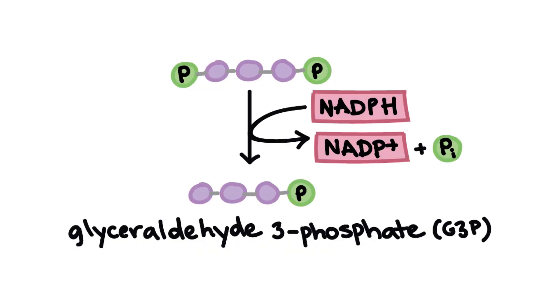Then, NADPH gives away two of its electrons to the molecule while taking away its phosphate group. This step produces 3-carbon G3P sugar, and as a byproduct, NADP+ and an extra phosphate group.